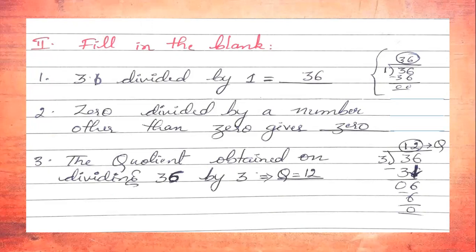For example: 0 ÷ 10 = 0 and 0 ÷ 25 = 0. So 0 divided by any number other than 0 gives 0. Third: the quotient obtained on dividing 36 by 3 equals ___. In the 3-times table, 36 goes by 12, since 3×12=36. So the quotient Q = 12. Therefore, the quotient obtained on dividing 36 by 3 is 12.